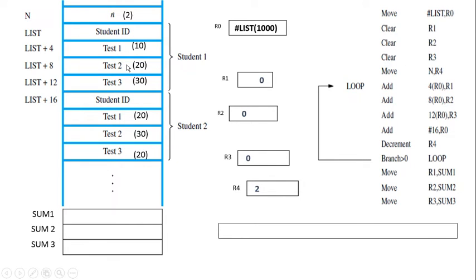Consider this program code, which is implemented to execute the addition task. First, MOVE #list, R0 stores the address pointed by label list into register R0 — already assumed as 100000. Then clear R1, R2, and R3, setting their values to zero.